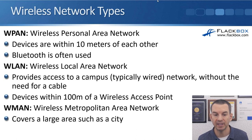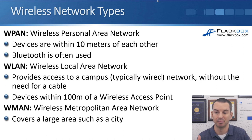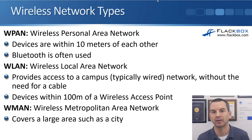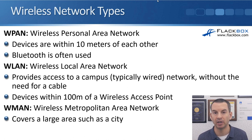A WLAN is a wireless local area network that provides access to a campus network. That campus will typically be a wired network, and having Wi-Fi also allows you to connect to it wirelessly. It is possible that an entire building or corporate office connects wirelessly, but more likely there's also a wired network. With a WLAN, you can connect to that wired infrastructure without needing a cable yourself. Devices are within 100 meters of a wireless access point with a WLAN.